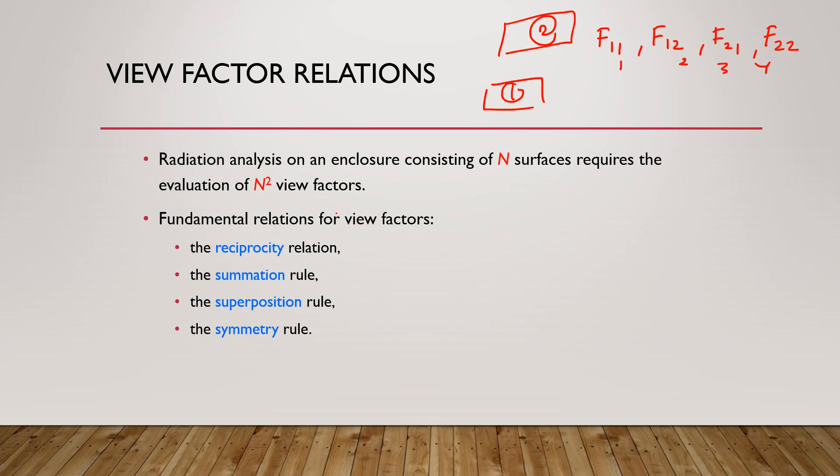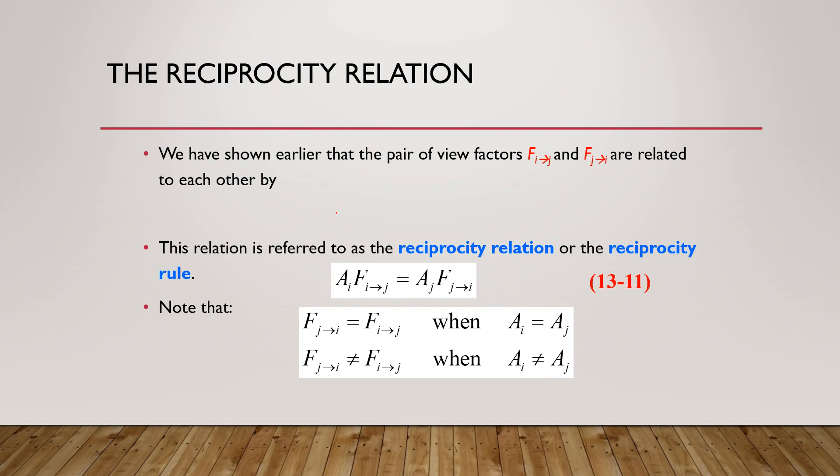We use fundamental relationships to solve and reduce the number of view factors we need to calculate. The reciprocity relationship states that A_i × F_ij = A_j × F_ji. If both surfaces have the same dimensions, the areas cancel, so F_ij = F_ji. If the areas differ, F_ij does not equal F_ji.